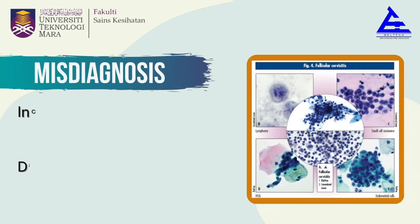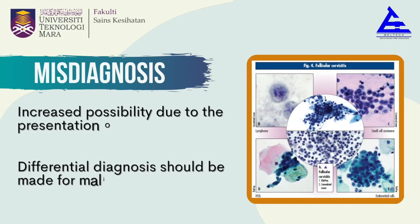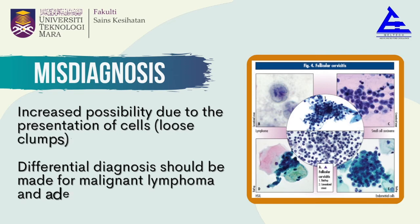There is an increased possibility of misdiagnosis due to the presentation of loose clump cells. Differential diagnosis should also be made for malignant lymphoma and adenocarcinoma.